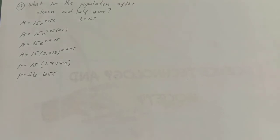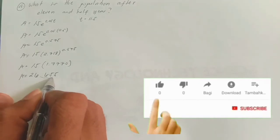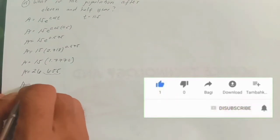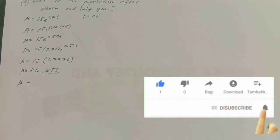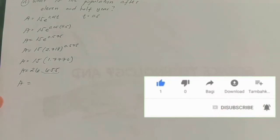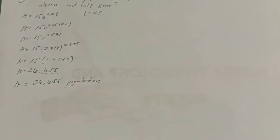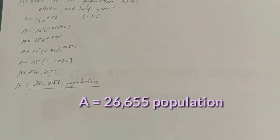Next, multiply 15 times 1.777. Using the calculator, the answer would be 26.655. Is this the final answer? Not yet. Go back to the problem. It says in thousands. Just simply move the decimal point three places. Therefore, the population A would be 26,655. That's the final answer for letter A.